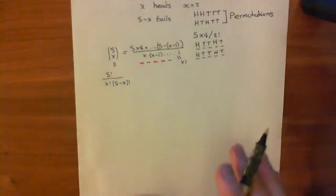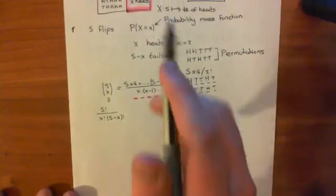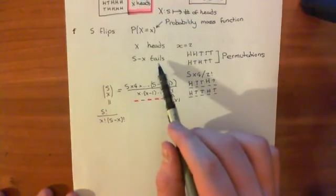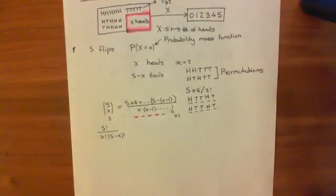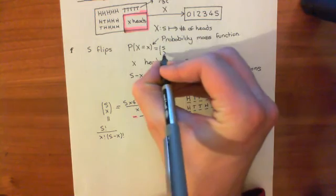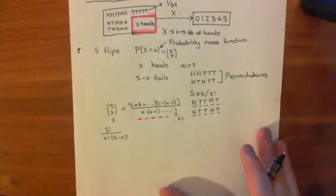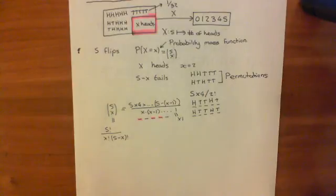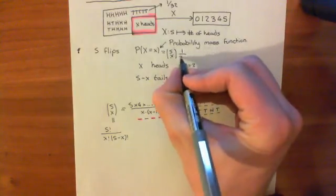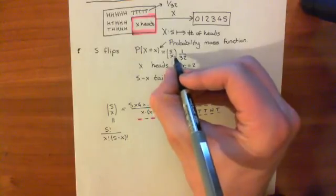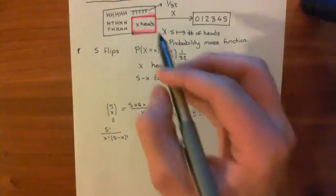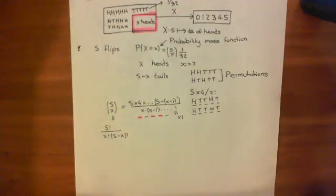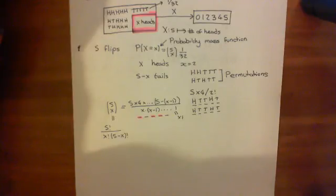So that's the number of permutations of x heads and 5 minus x tails — that's the number of things in the set of outcomes with x heads, which is 5 choose x. Then what we need to do is multiply by the probability of each outcome, which is just 1 over 32. That tells us the probability that X equals little x. I will cut this video here and we'll continue the discussion in the next video.